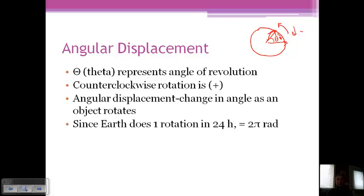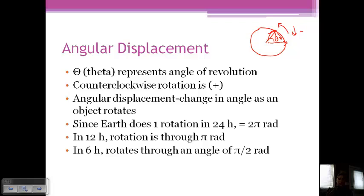Since Earth does one rotation in 24 hours, remember we said one rotation was 2 pi radians. And so in 12 hours, the rotation has gone through pi radians, which would just be right half of a full rotation. And in 6 hours, it rotates through an angle of pi over 2 radians. And so we could relate that to theta.